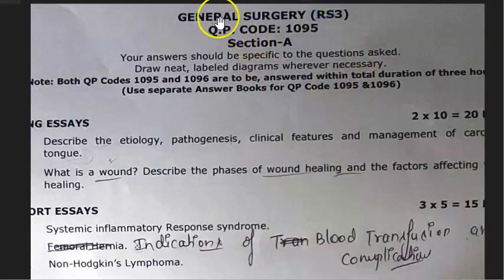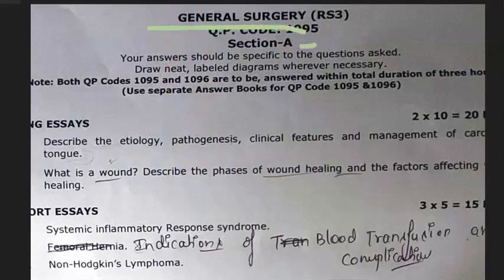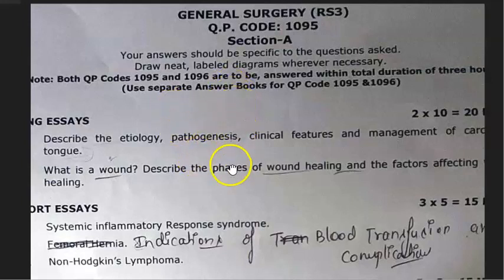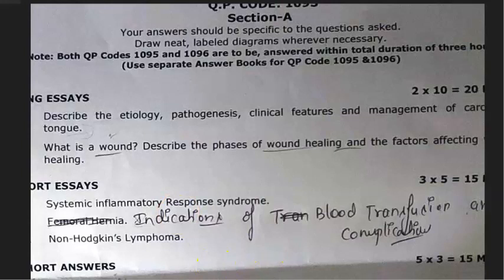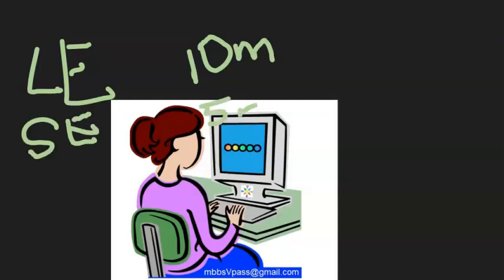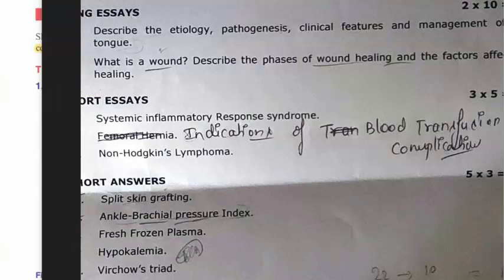Hello everyone. In this video, let us look at this general surgery final year paper from the University of Karnataka RGUHS. This is Section A, which covers above-the-abdomen topics. The paper pattern includes long essays worth 10 marks each, short essays worth 5 marks each, and short answers worth 3 marks each.